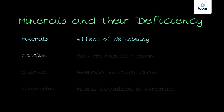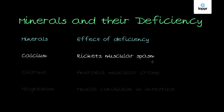First, we will look at calcium. It is a very important component of bone and teeth, essential for normal blood clotting, and needed for normal muscle and nerve function. The deficiency of calcium causes rickets and muscular spasm. Note that vitamin D deficiency is also required for these diseases to occur.